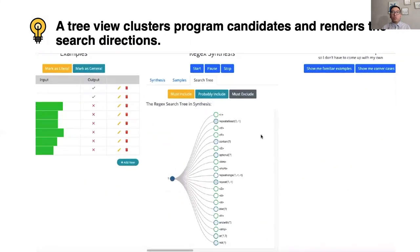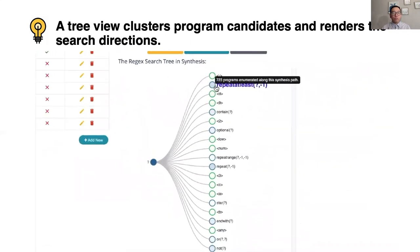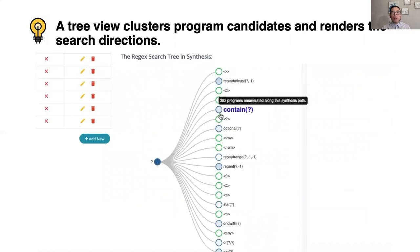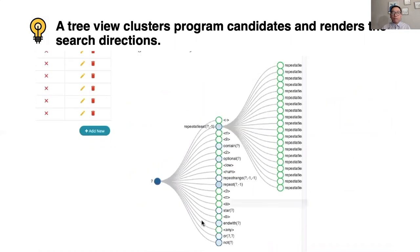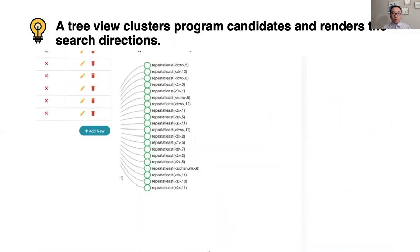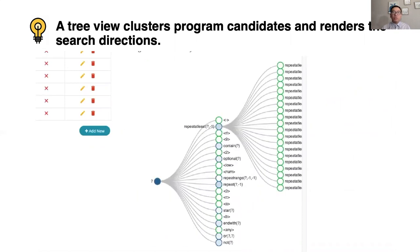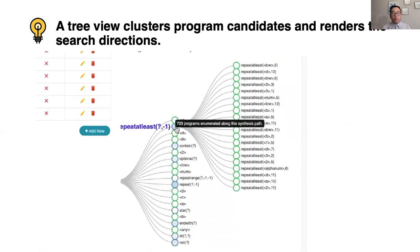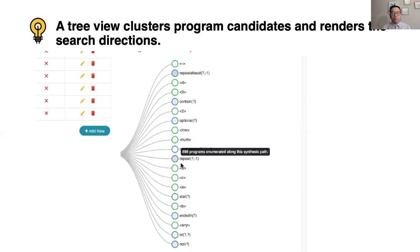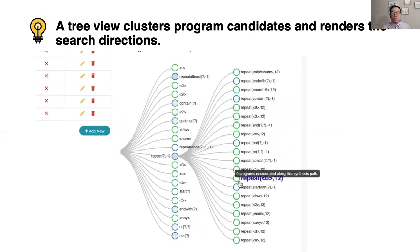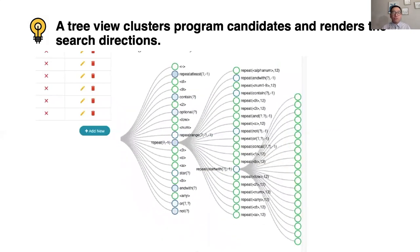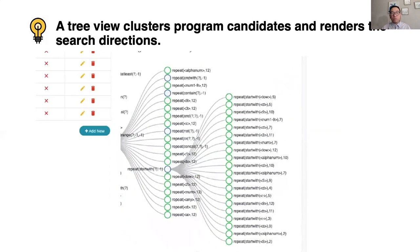You can also look at the search directions a synthesizer has been through. The tree visualization clusters all explored programs based on how they are derived from an empty program step by step. The root of the tree is an empty program, and the internal nodes are partial programs derived from the empty program. By expanding the internal node, you can see how a partial program is further concretized during the synthesis process.